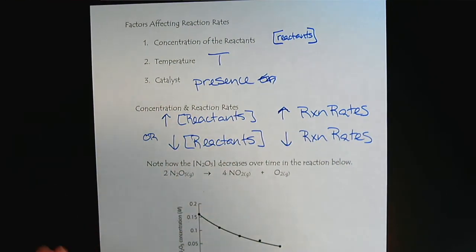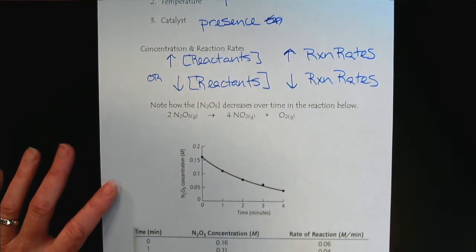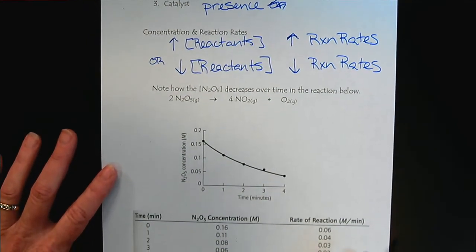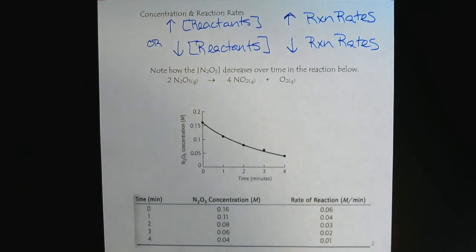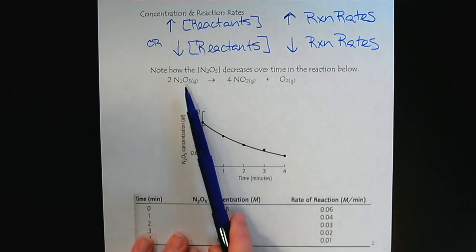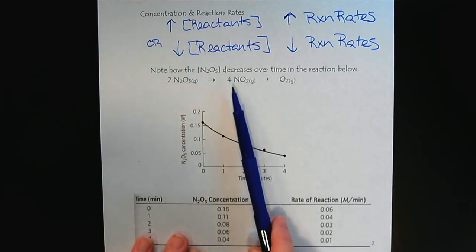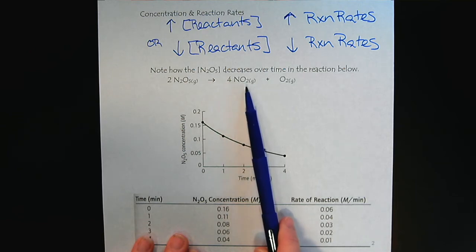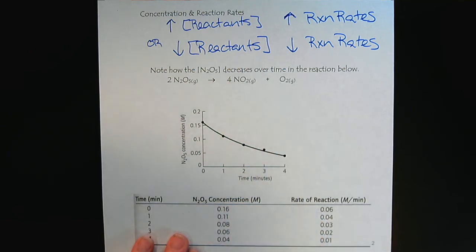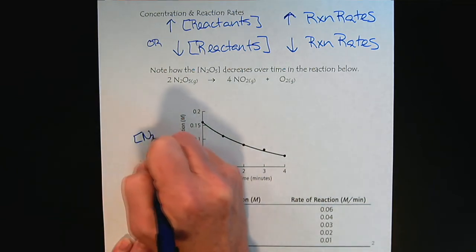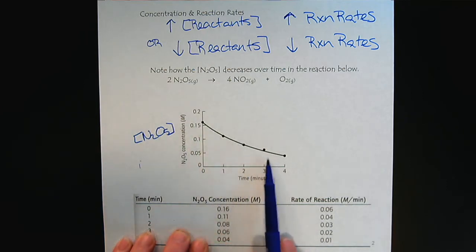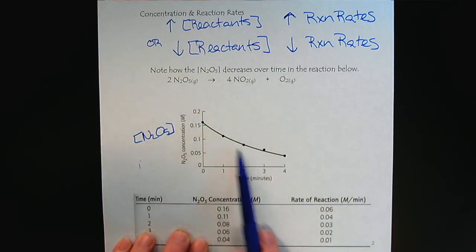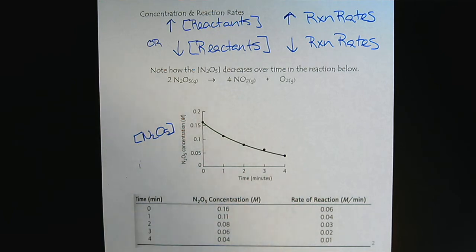Let's look at what this means graphically. Here we have a reaction of dinitrogen pentoxide decomposing into nitrogen dioxide and oxygen. As the reaction proceeds, the concentration of the dinitrogen pentoxide is lowered. Let's connect this to the reaction rate.